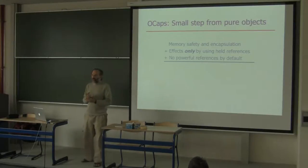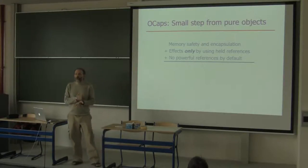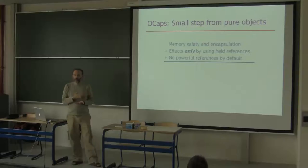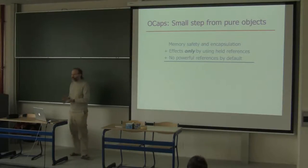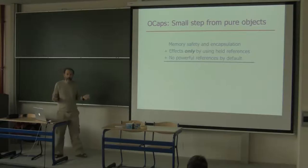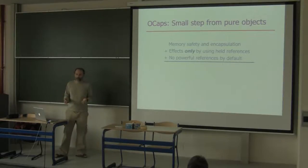A system in which these are the only ways Bob can come to hold a reference to Carol is known as a memory-safe system. Many languages — for example, Java — are already memory-safe: if Bob doesn't get a pointer to Carol by these rules, he can't forge a pointer by, for example, casting an integer, as they can in C++.